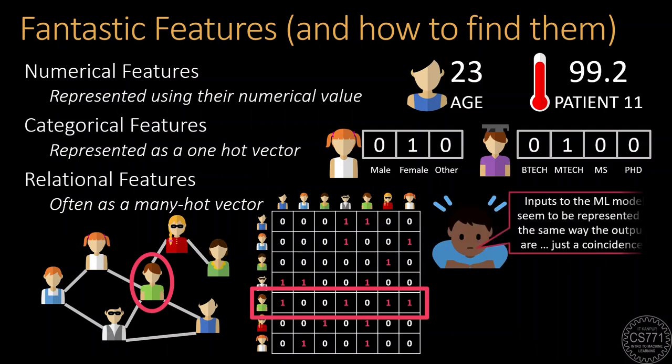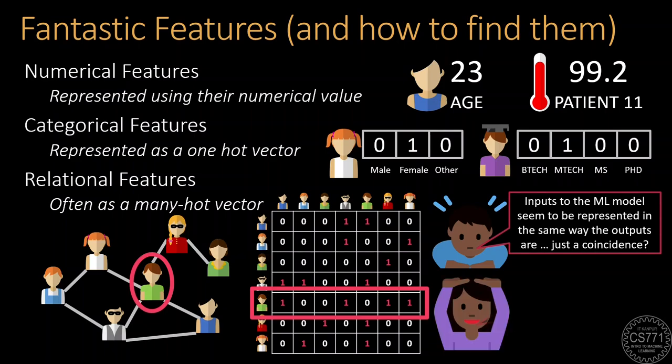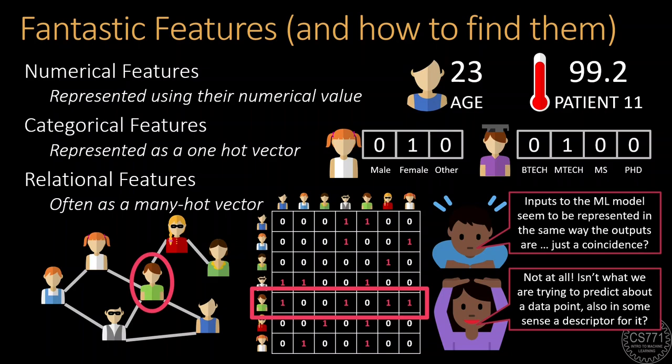Now, at this point, you might be wondering about this weird coincidence that the inputs of the machine learning model are structured in the same way the outputs were, as numbers or one-hot vectors or many-hot vectors. Is this just a coincidence? Not really. Because, think about it, what we are trying to predict about the data point is just another property or another descriptor for it, right? In fact, it's very popular in machine learning to take certain features of a data point and convert them to other features which are more meaningful or more compact or more useful.